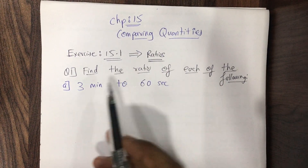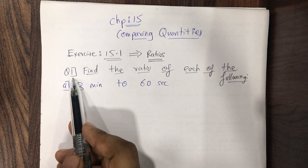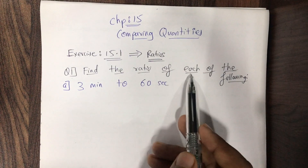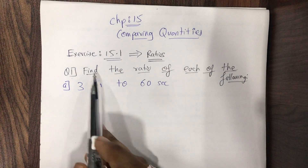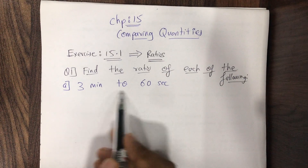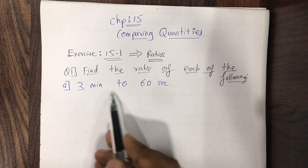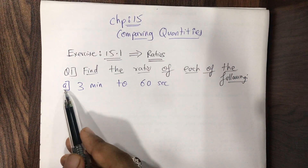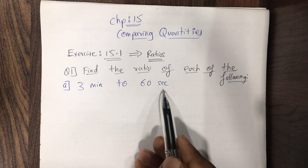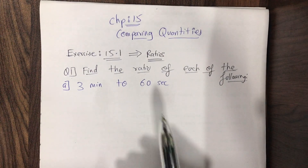On the screen we have question number one, which says: find the ratio of each of the following. Sub-question A is: 3 minutes to 60 seconds.